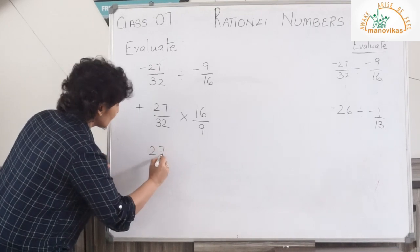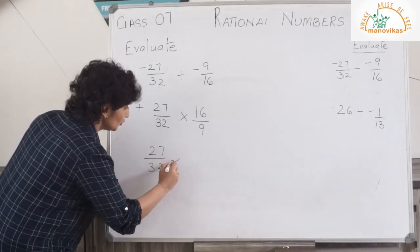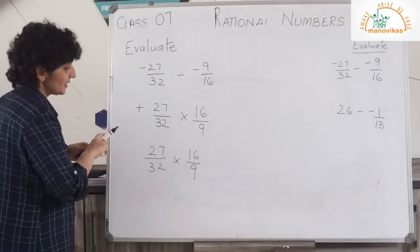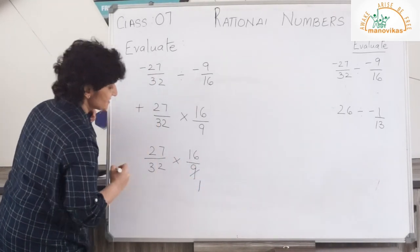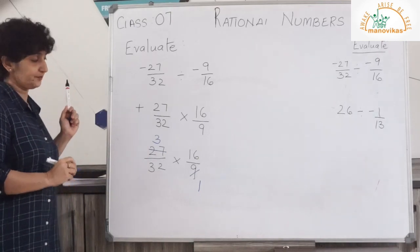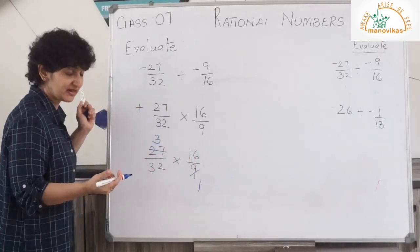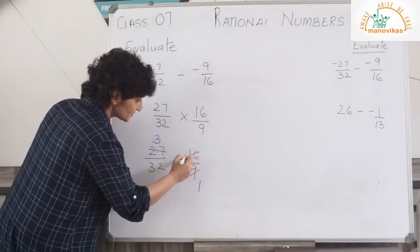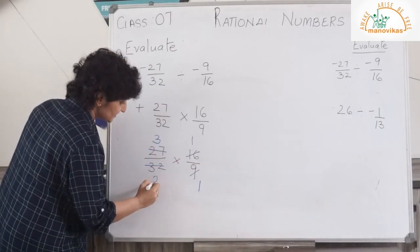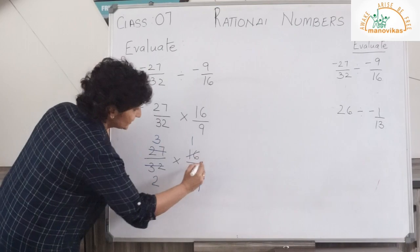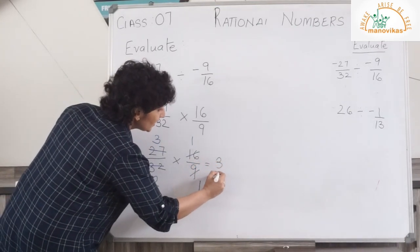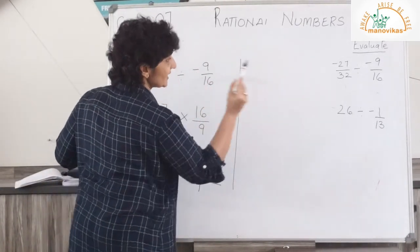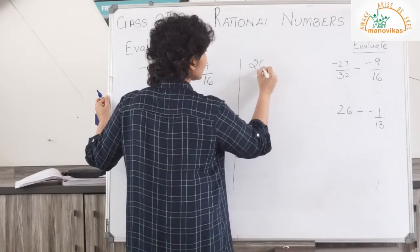Now let us reduce 27 upon 32 multiplied by 16 upon 9. When I reduce, 9 goes into 27 three times, and 16 goes into 32 twice, so I'm left with 3 upon 2. I hope I'm clear with this. Let's go to the next question: I have 26 upon 1 divided by minus 1 upon 13.